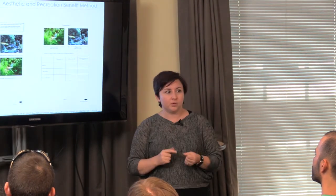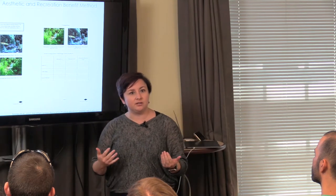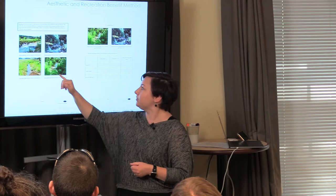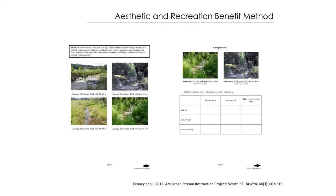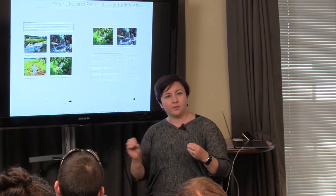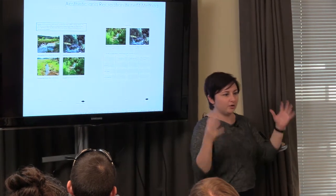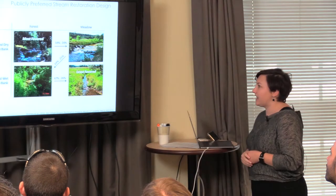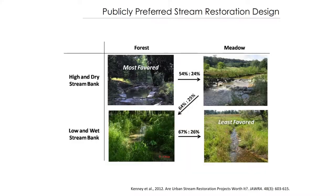Aesthetic and recreation benefits are a little trickier. People don't view stream restoration approaches the same way, so we looked at four different scenarios: high and dry with meadows, high and dry with tree cover, low and wet with meadows — more wetland-like systems — and low and wet with tree cover, so highly shaded. We had people assess what they liked best. The most favored approach was high and dry with trees — almost like a Disneyland scenario — and the least favored was the low and wet meadow conditions.